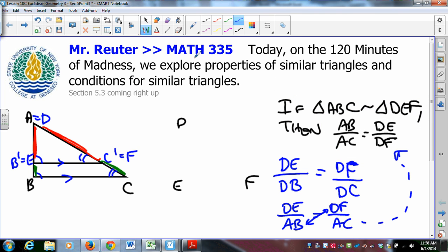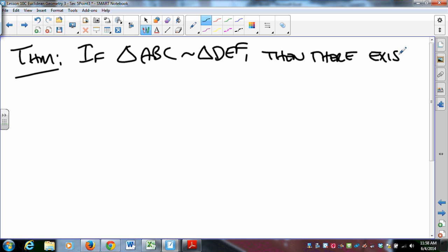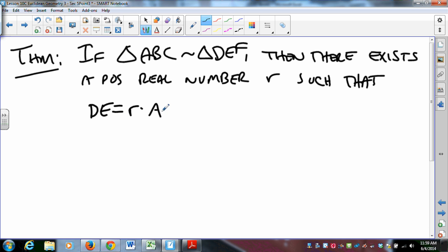In fact, it is a theorem that if triangle ABC is similar to triangle DEF, then there exists a positive real number R such that DE is R times AB, and EF is R times BC, and DF is R times AC.